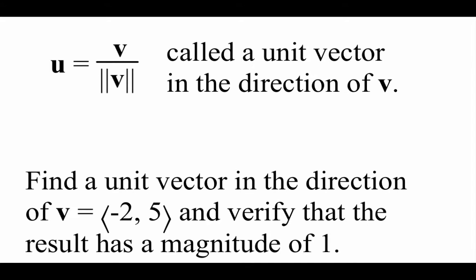A unit vector is just a vector that has a length or magnitude of one unit. The way we get a unit vector — let's say we're dealing with vector v — is we take v divided by its magnitude, and that gives us this u vector, which we're calling a unit vector in the direction of v.